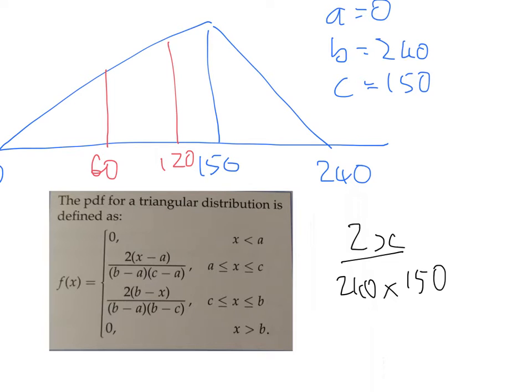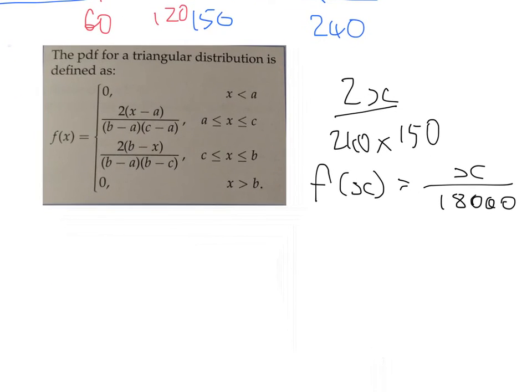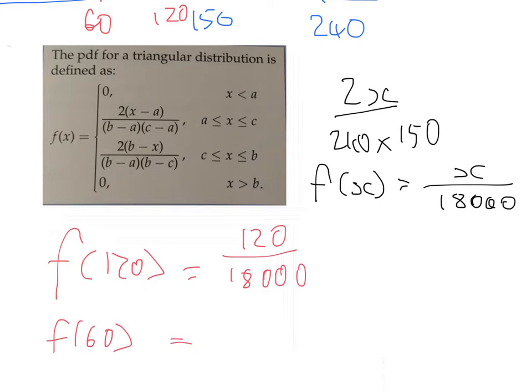So F of X is X divided by 18,000. Why is that useful? Well, that's actually really useful, because it means that then we want to find F of 120 and F of 60. So that equals 120 over 18,000. So that equals 60 over 18,000.